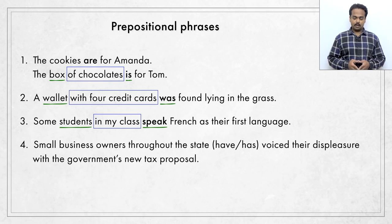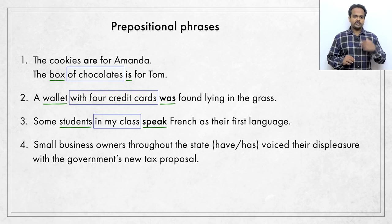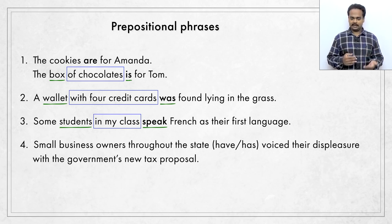Here's one last example. Small business owners throughout the state have or has voiced their displeasure with the government's new tax proposal. Small business owners means people who own shops, restaurants or other companies that are small. Throughout the state means not just in one place, but in every place across the state. To voice your displeasure is a common expression meaning you're not happy with something. Displeasure is the opposite of pleasure — to voice your displeasure is to express your disappointment or dissatisfaction. A tax proposal is a tax plan that the government has announced.